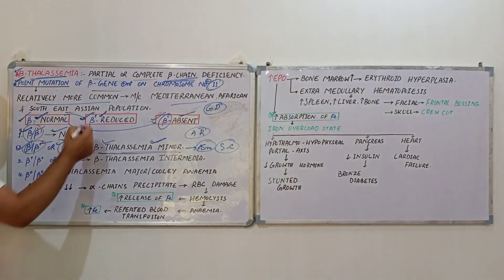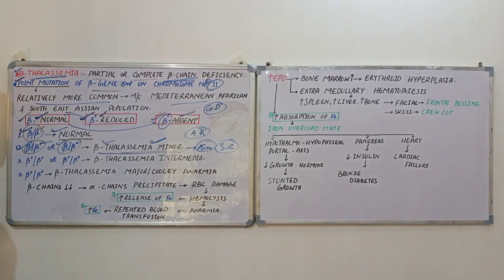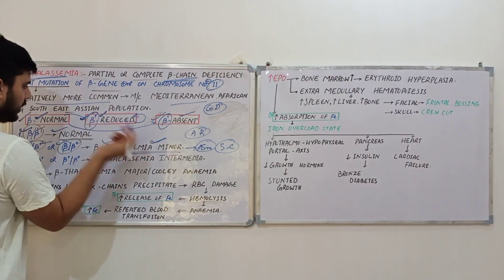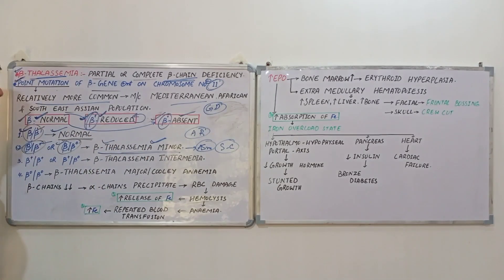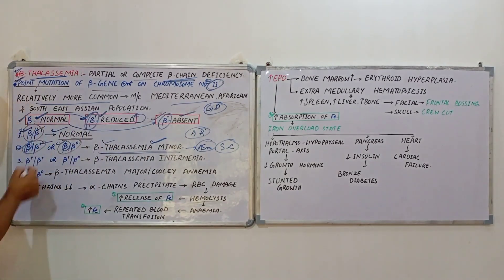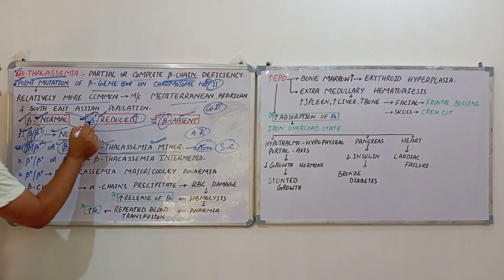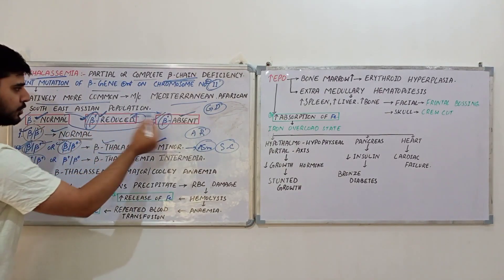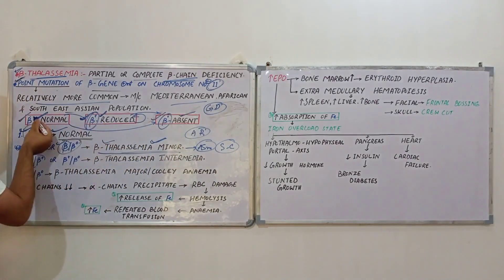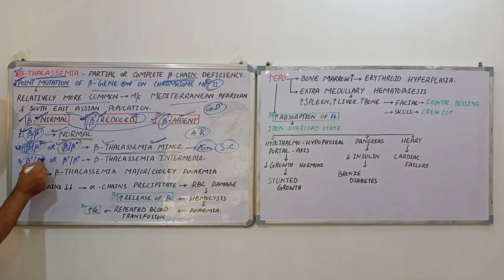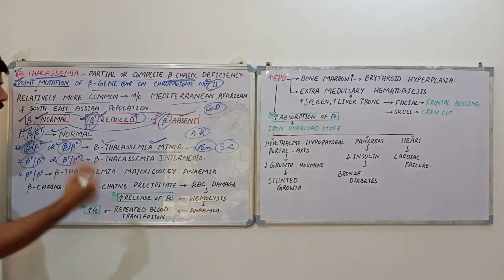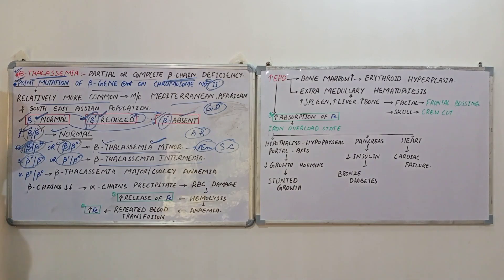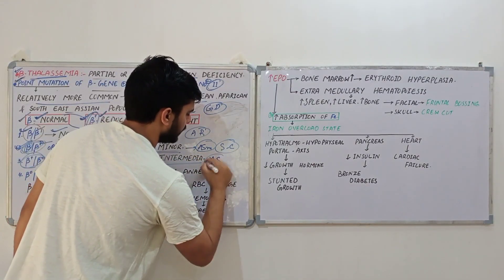Beta thalassemia intermediate arises from combinations of β⁺/β⁺ or β⁺/β⁰. This condition is mildly symptomatic and does not have severe pathology. Its symptoms are quite similar to those of alpha thalassemia.